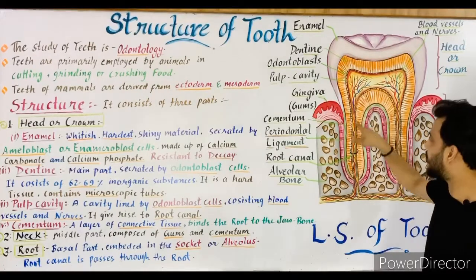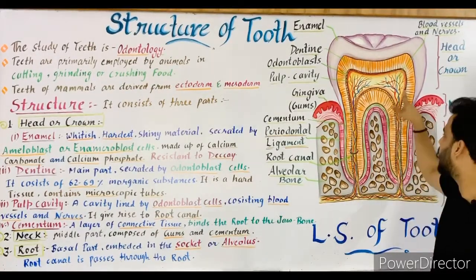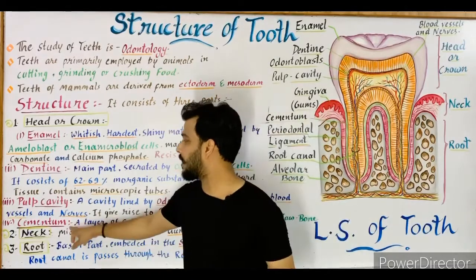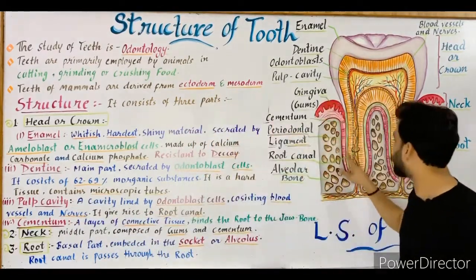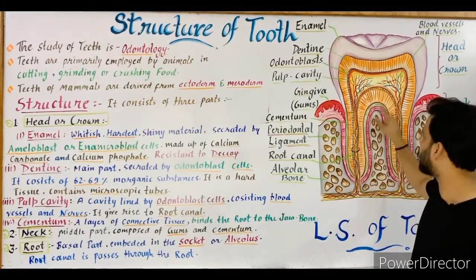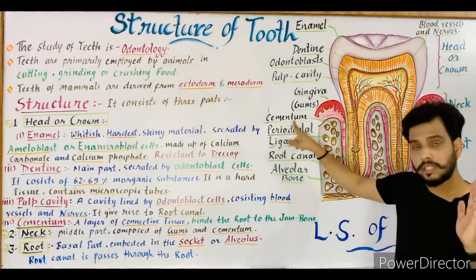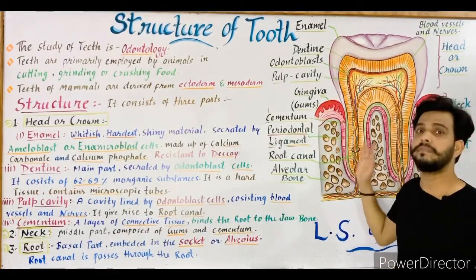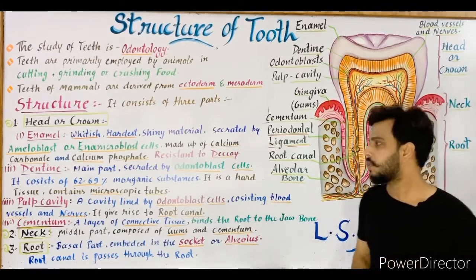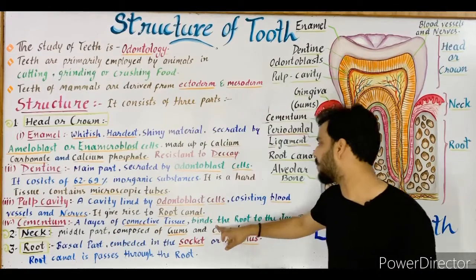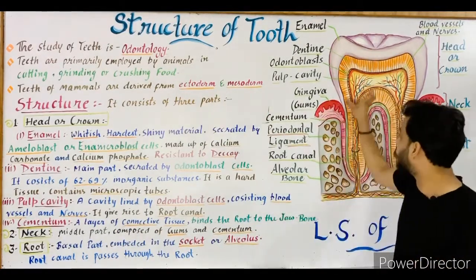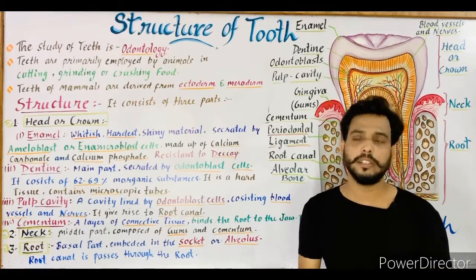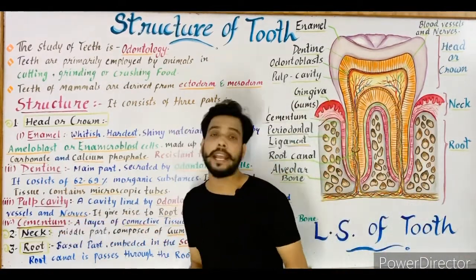Root canals arise from the pulp cavity. Cementum is a layer of connective tissue through which the tooth is attached to the jawbone. It binds the root to the jawbone and plays a very important role in the attachment of the tooth.